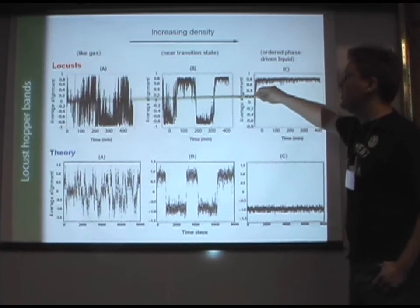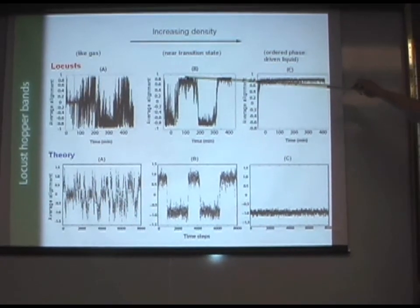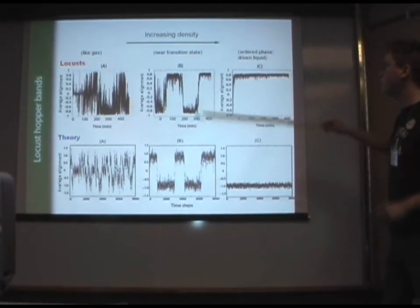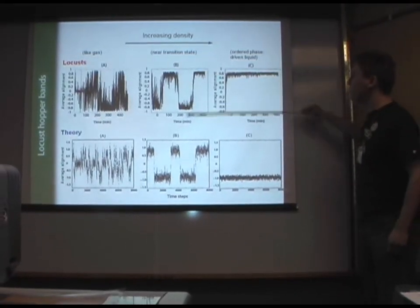And we go from this gaseous-like phase at low densities to intermittency, as Christian was discussing earlier, to this collective motion where they always go in one direction, randomly determined. If it's clockwise here, it could have been anticlockwise.